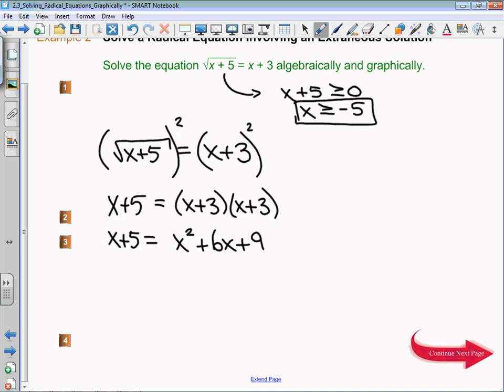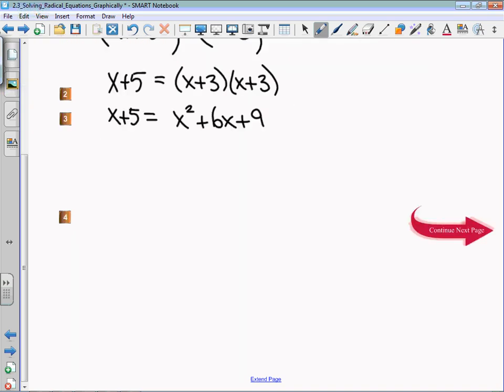You need to have it on the tip of your brain, the knowledge of how to solve a quadratic. The easiest by far is to get one side equal to 0 and attempt to factor it. So I'm going to subtract x from both sides and subtract 5 from both sides. That leaves me with 0 equals x squared plus 5x plus 4.